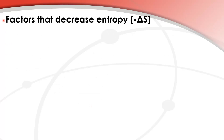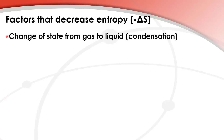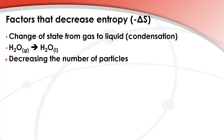Next we look at some factors that decrease entropy — negative delta S. A change of state from gas to liquid is condensation. Here we have steam condensing to liquid water. Gases are more disordered than liquids, so we have a decrease in disorder, therefore a decrease in entropy. Next is decreasing the number of particles: two moles of aqueous ions forming one mole of solid ionic compound is a decrease in entropy.